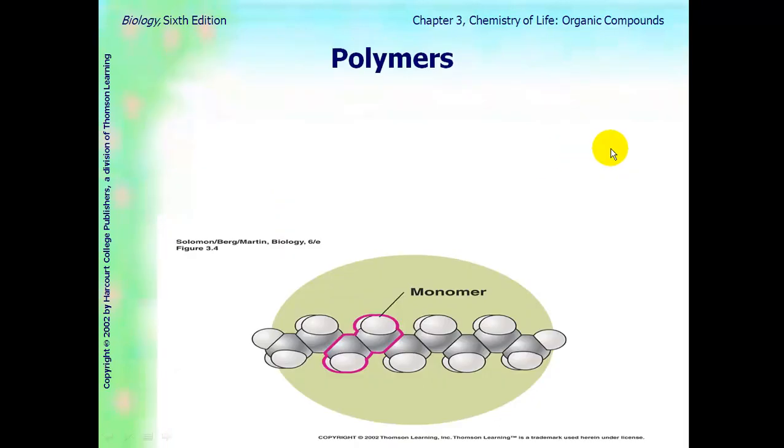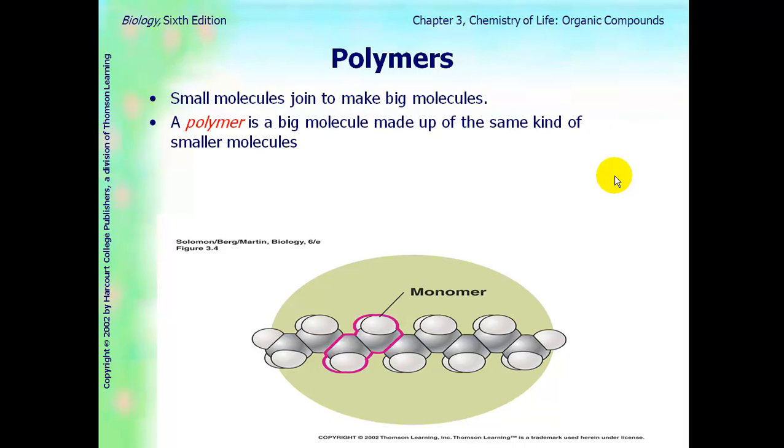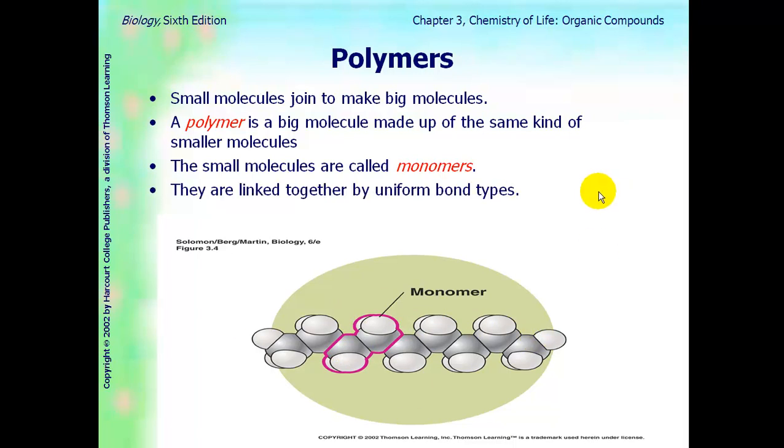A term you need to understand is a polymer. A polymer is a very large molecule that's made up of smaller molecules. So, a polymer is a big molecule made up of the same kind of smaller molecules. The small molecules are called monomers. So, in this picture, this is the monomer, and that makes up, repeatedly, the big polymer. They are linked together by uniform bonds. So, they might be linked together all by covalent bonds, for example.